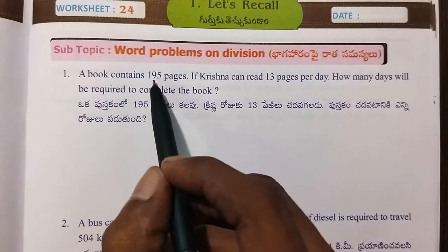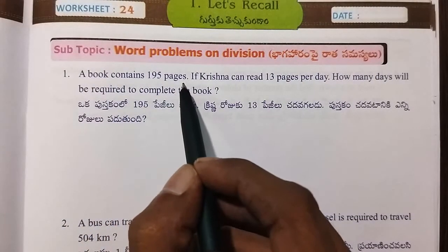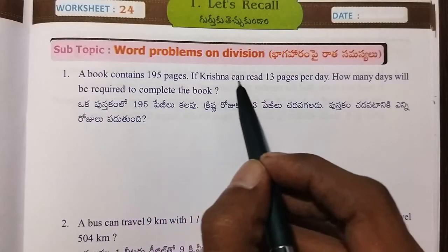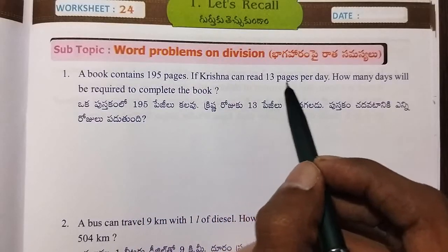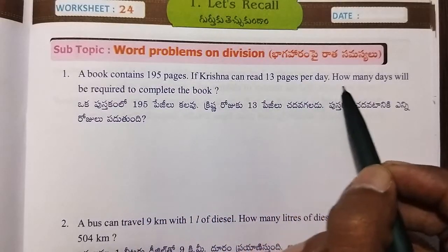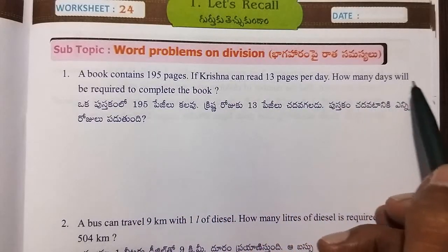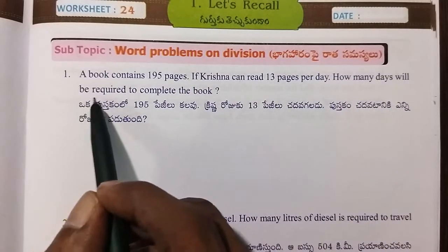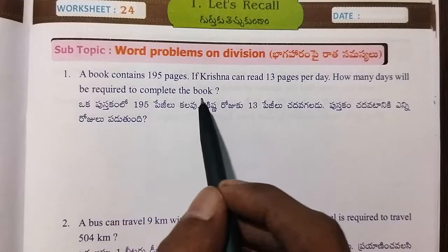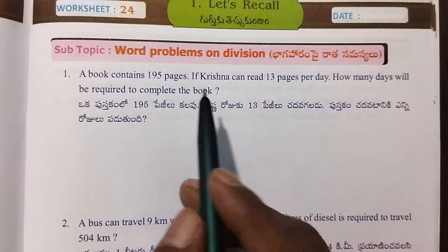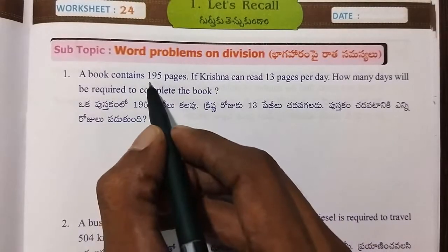This book contains 195 pages. If Krishna can read 13 pages per day, how many days will be required to complete the book?